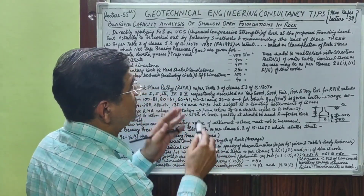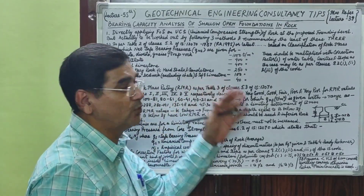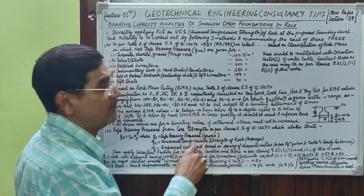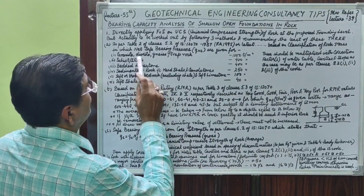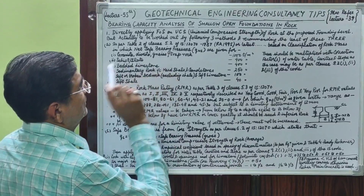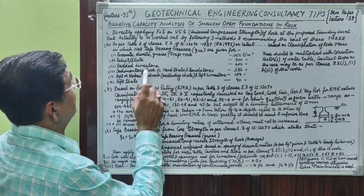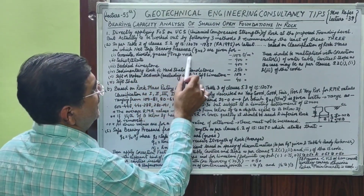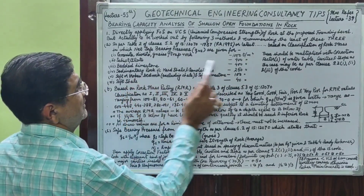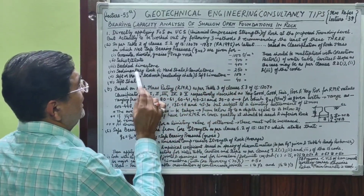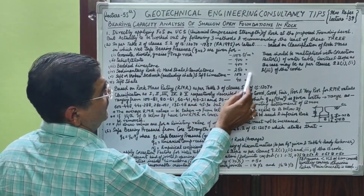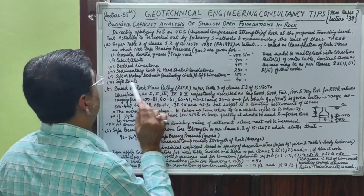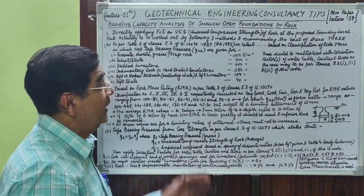The engineer's primary concern is to identify the kind of rock at the site, get it identified and tested in the lab. Table 2 of Clause 5.2 suggests QNS values as follows: granite, diorite, trap rock — 1000 ton per meter square; resistant rock — 400 ton per meter square; bedded limestone — 400 ton per meter square; sedimentary rock including shales and sandstones — 250 ton per meter square; soft or broken bedrock excluding shale and soft limestone — 100 ton per meter square; soft shale — 40 ton per meter square.